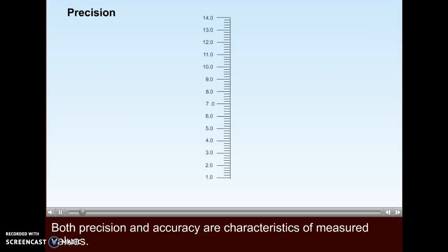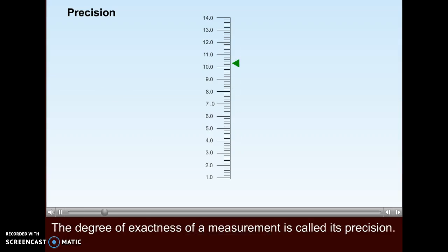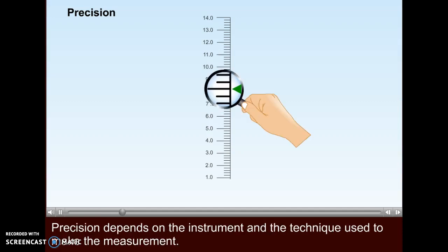Both precision and accuracy are characteristics of measured values. The degree of exactness of a measurement is called its precision. Precision depends on the instrument and the technique used to make the measurement.